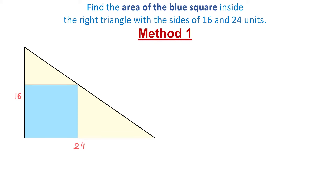In this figure we have a right triangle with the sides of 16 and 24 units and we need to find the area of the blue square. There are multiple methods for solving this problem and I will show you 4 of them. Let's start with the first one.